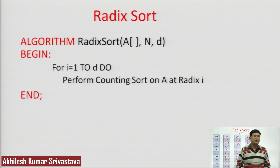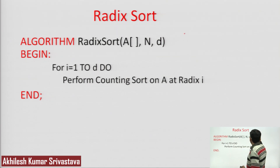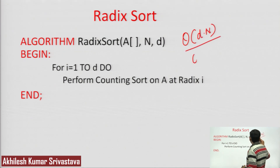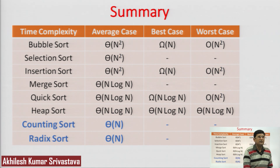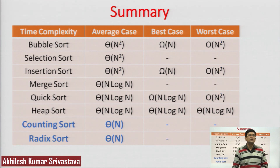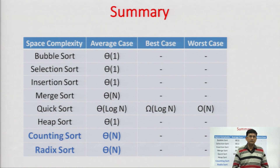Finally, we sort by the hundreds digit (first radix), and the numbers become fully sorted in ascending order: 100, 135, 204, ... . In radix sort, we perform counting sort D times, where D is the number of digits (length of the numbers). The time complexity is Θ(D × N). If D is a small constant, the time complexity is Θ(N). Both counting sort and radix sort have time complexity Θ(N) and space complexity Θ(N). Thank you.